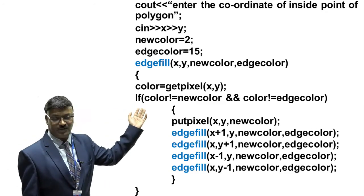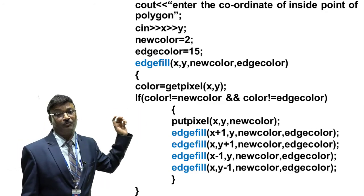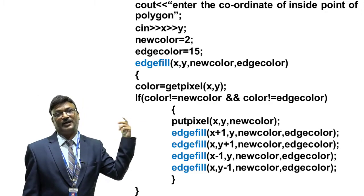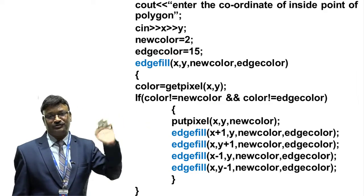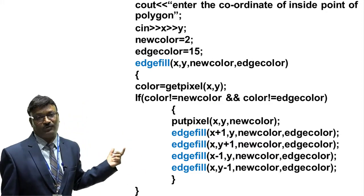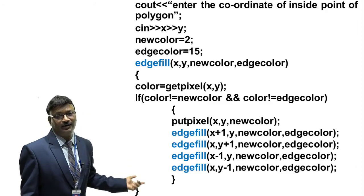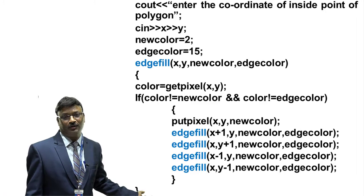Now for the edge fill algorithm. Here you read the new color and then the edge color — the color of the polygon's edge. The function name is edge_fill, and you pass x, y, new_color, and edge_color. The condition is: color = getpixel(x, y); if color != new_color AND color != edge_color, then fill it using putpixel, and again call the function recursively with x+1, y+1, x-1, y-1 — the four directional values.